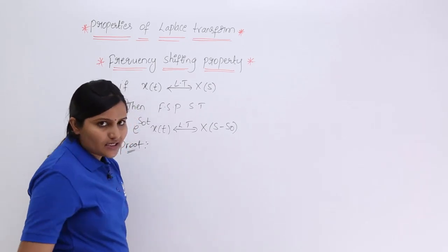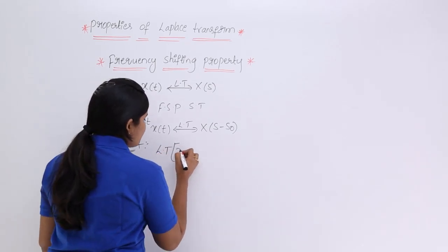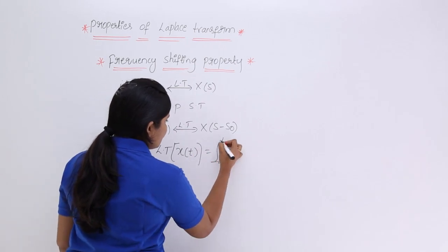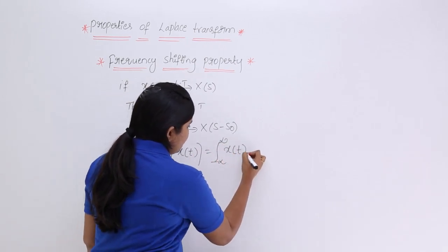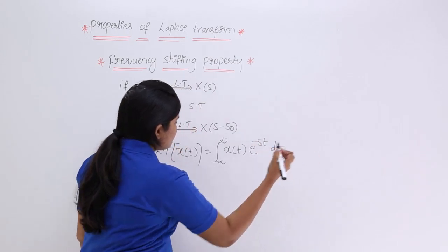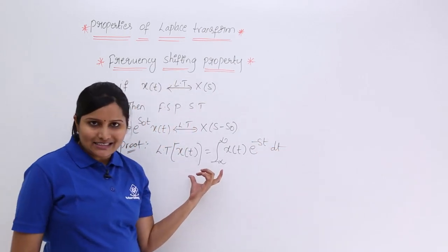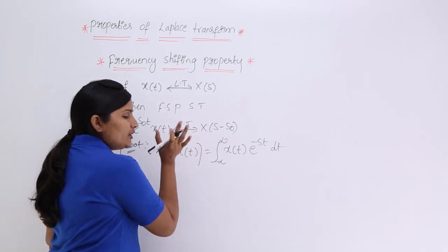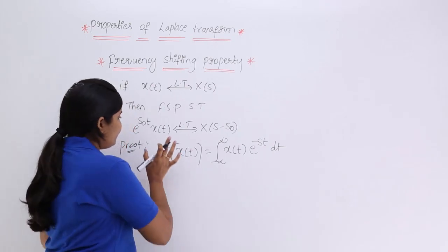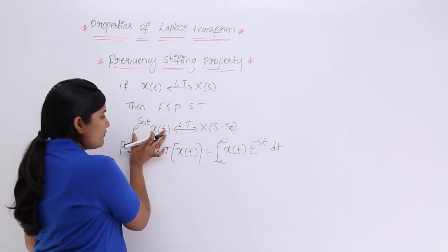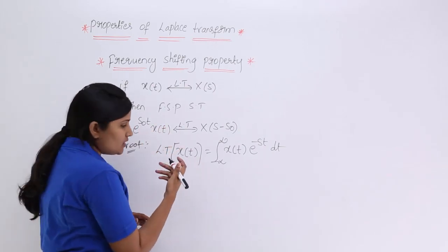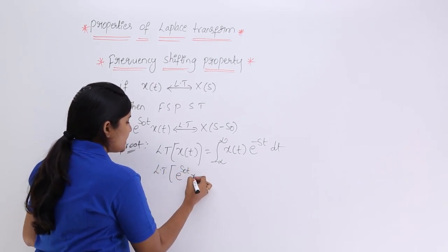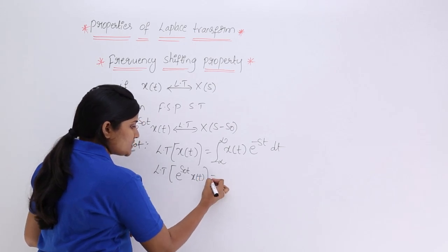The Laplace transform of x(t) is defined as the integral from minus infinity to infinity of x(t)·e^(-st) dt. This is the Laplace transform of any signal x(t). Now we do not want the Laplace transform of x(t) alone — we require the Laplace transform of x(t) multiplied by the exponential e^(s₀t).